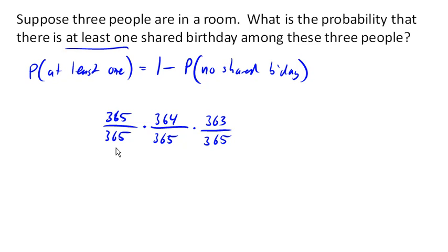And this turns out to be, you'll notice that this first fraction is actually equal to 1, so this turns out to be about .9918. Again, that's the probability of no shared birthday. So the probability of at least one shared birthday is 1 minus that. It's pretty small, it's about 0.8%, not too big.